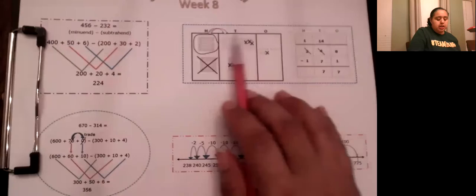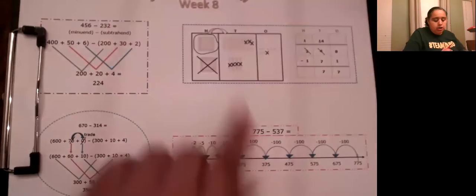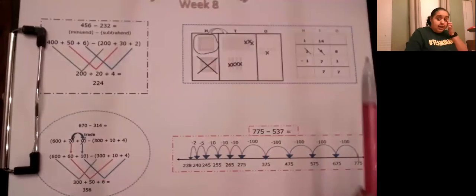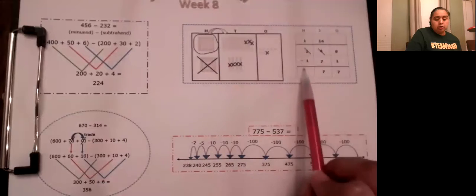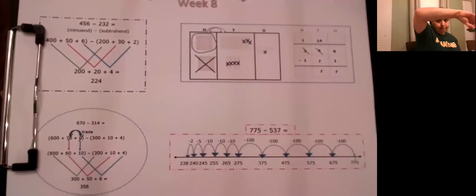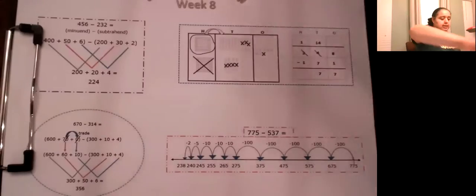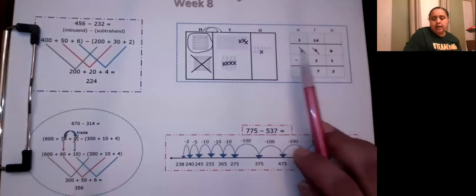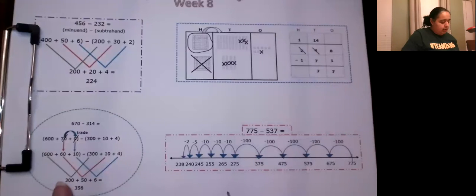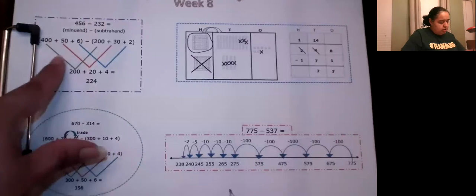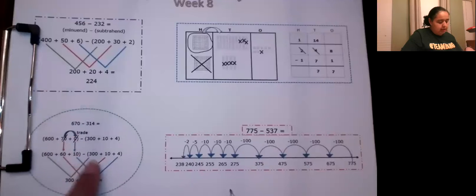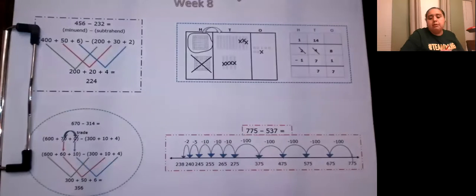We also did subtraction using pictures, and you're going to be more comfortable with this one because many of you like to see the picture. During online learning we also learned how to subtract using the algorithm, which is our new way of subtracting — where we regroup. Another way involves regrouping within, and we also learned how to add or subtract using a number line.